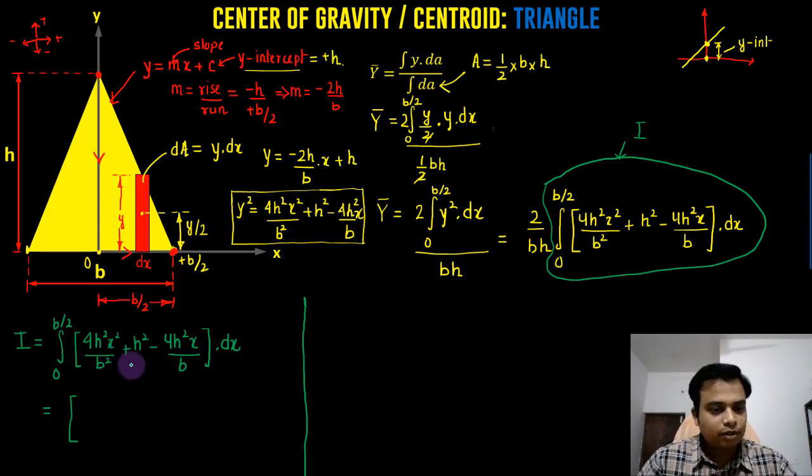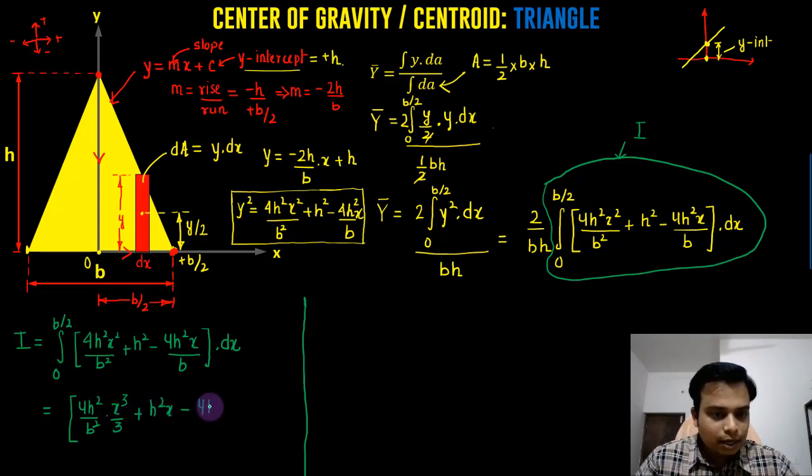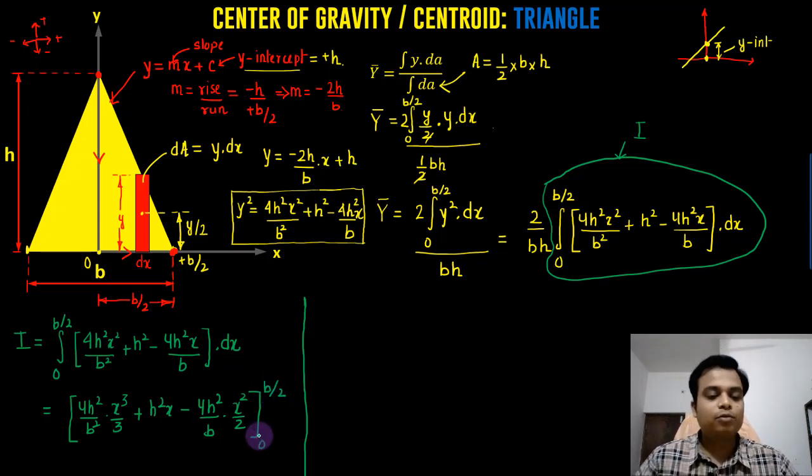This x square will become x cube over 3. Here, it will be x. And here, we'll have x square over 2. Let's go ahead. 4h square over b square. And that's going to be x cube over 3 plus h square x minus 4h square over b dot x square over 2. And you need to plug in the limits from 0 to b by 2. Now, you can clearly see upper limit minus lower limit. So you need to plug in the upper limit because lower limit is absolutely 0. So you don't have to worry about that. Once you plug in the upper limit, that's it. That's going to give you the value of the integral.